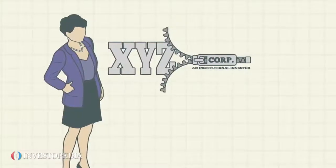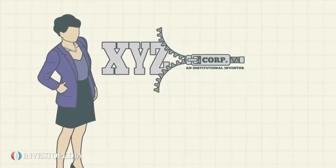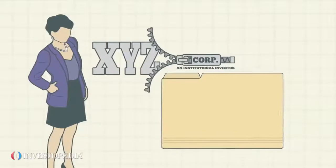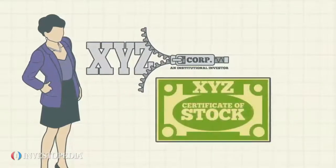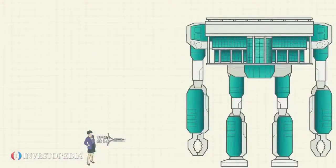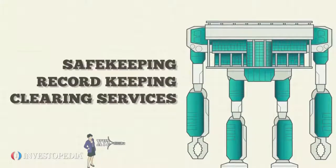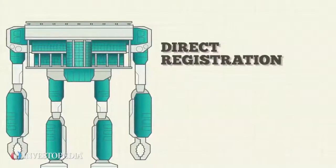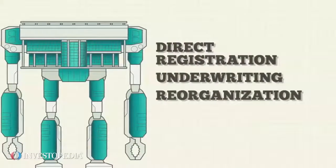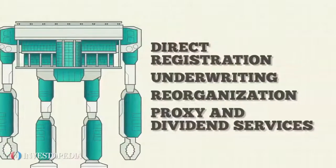Jenna not only uses the DTC as a custodian for XYZ's investments, she also uses it to manage XYZ's own shares. In addition to safekeeping, record keeping, and clearing services, the DTC provides direct registration, underwriting, reorganization, and proxy and dividend services.